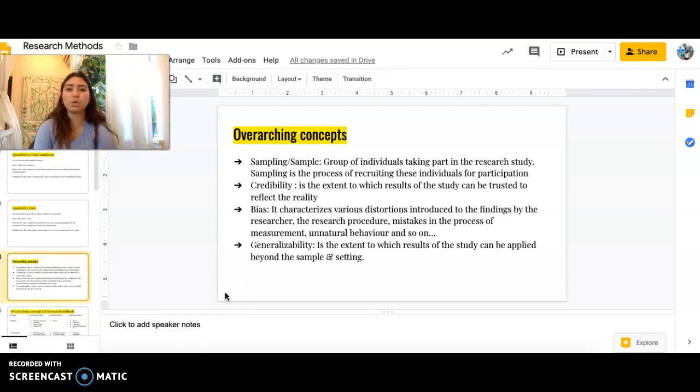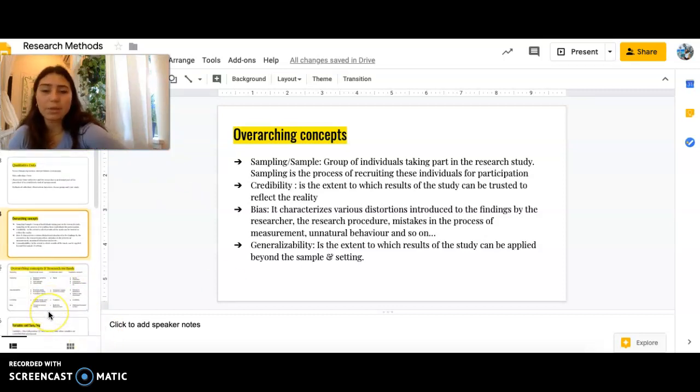Credibility is to which extent the results can be trusted to reflect the study. So, how credible is their researcher bias, etc. We'll talk about that. Bias characterizes the various distortions introduced to the findings by the researcher, the research procedure, mistakes in the process of measurement, unnatural behavior, and so on. I think I already touched on generalizability a little bit. It is the extent to which the studies can be applied beyond the sample and the setting and such. So you have to use a stratified sample to get that generalizability.